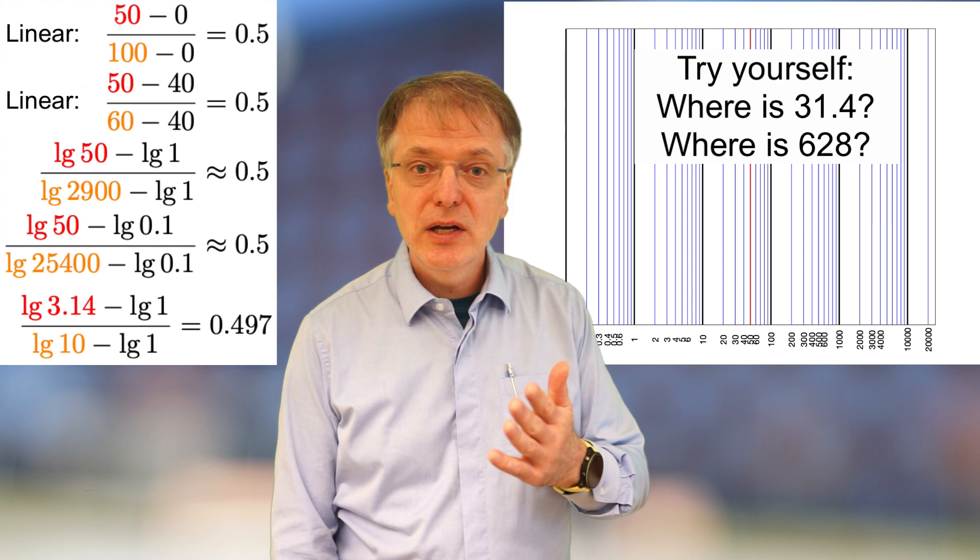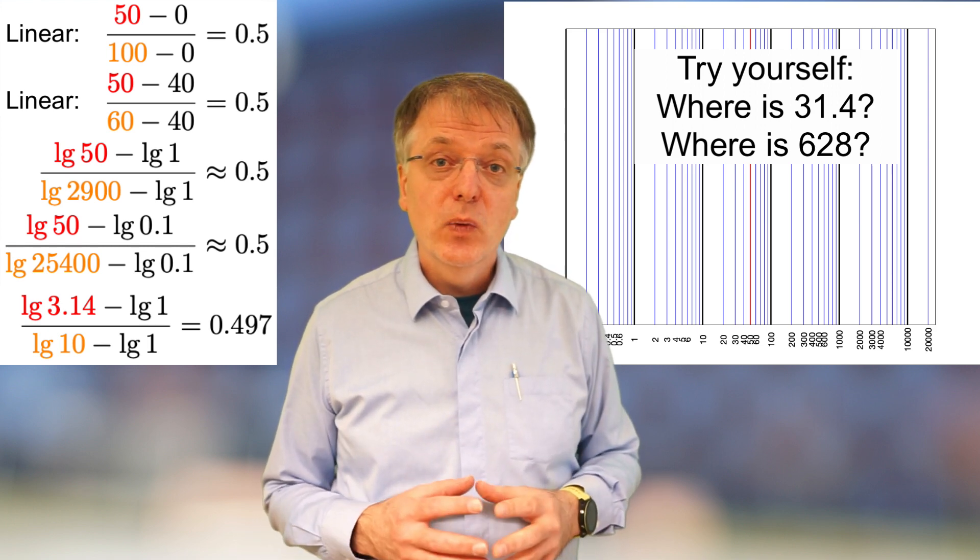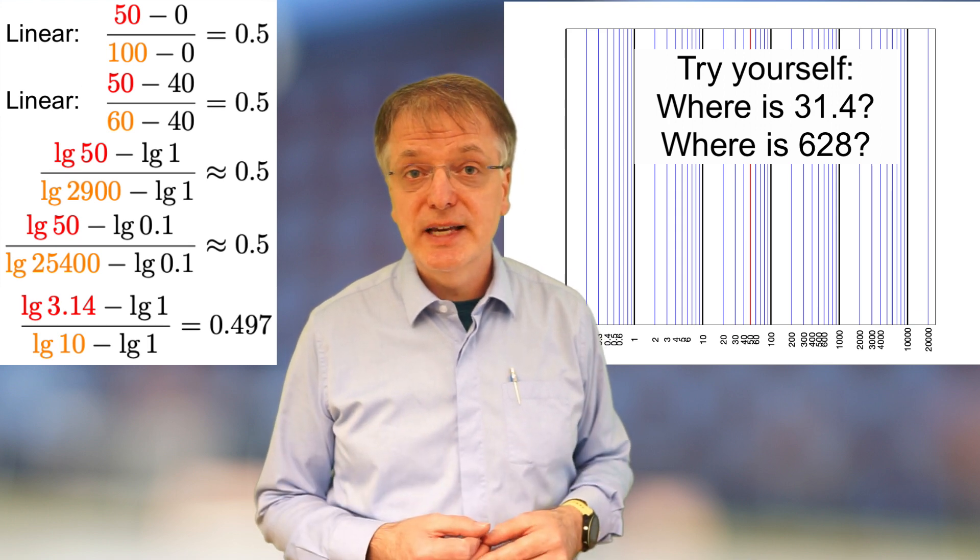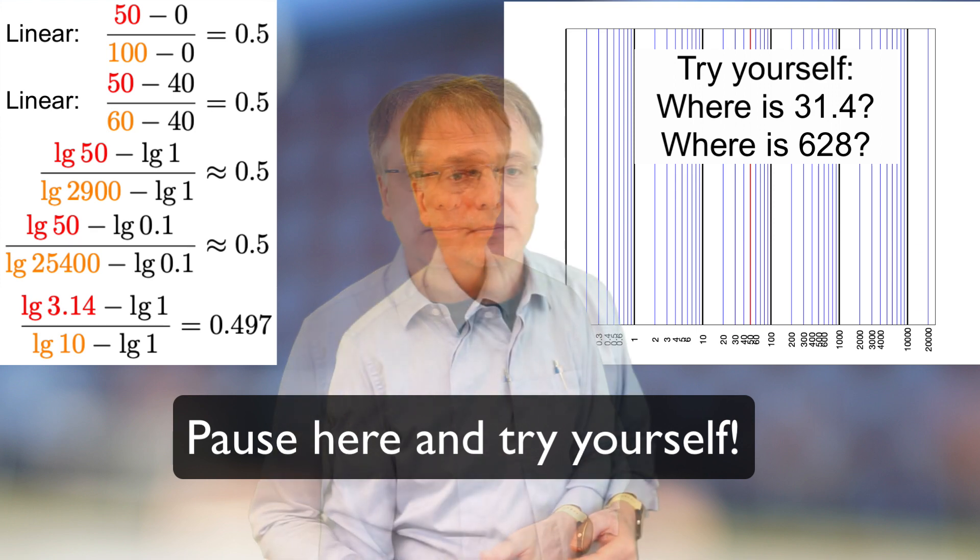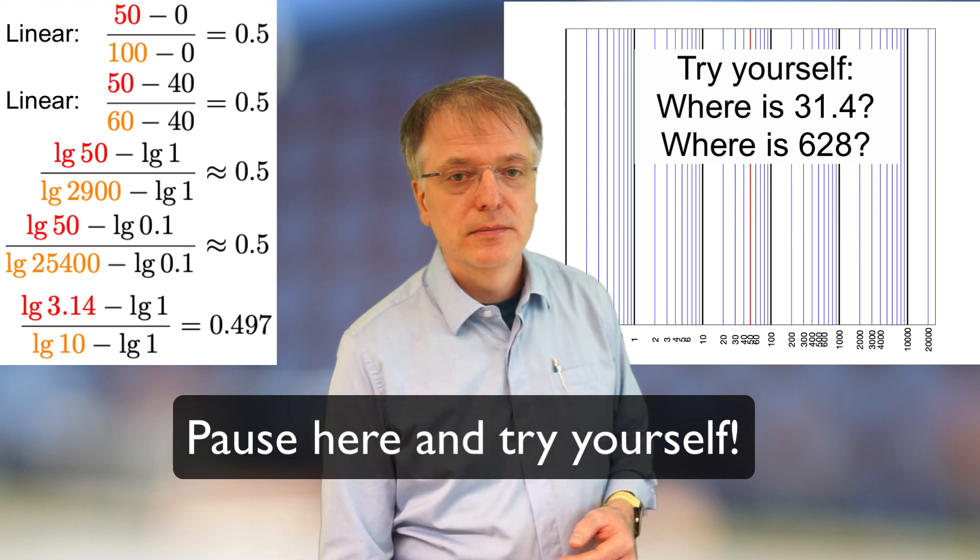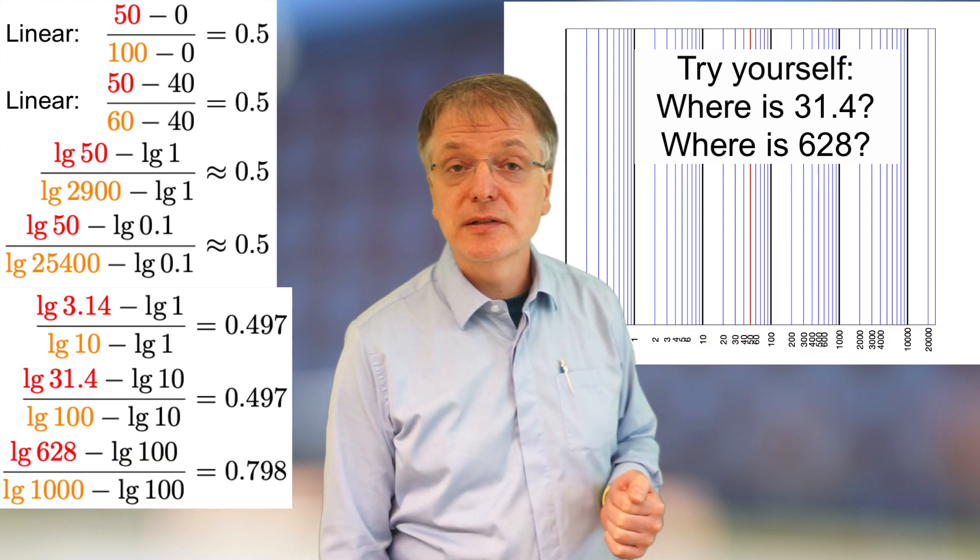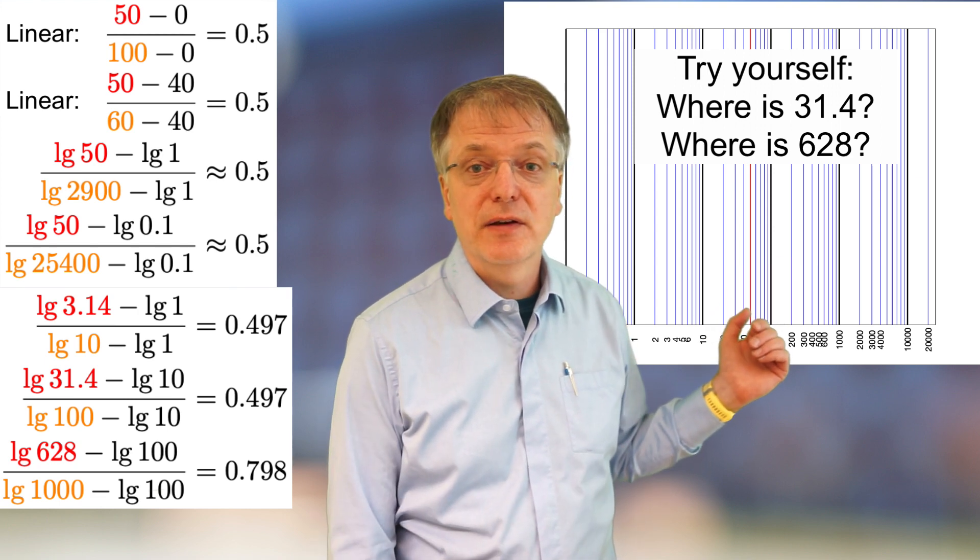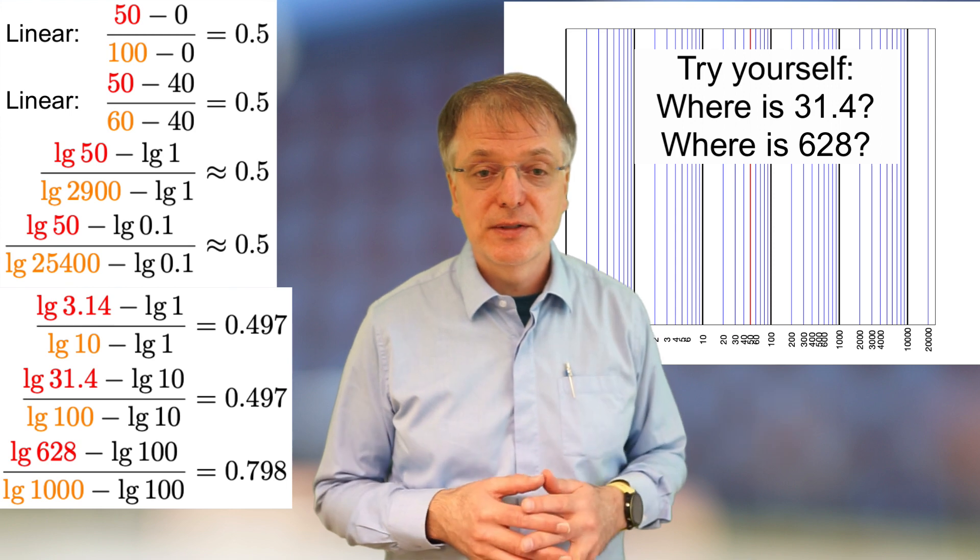Now try to do two examples yourself. Where is 31.4 and where is 628 in a logarithmic diagram. 31.4 is 49.7% of the distance from 10 to 100. And 628 is 79.8% of the distance from 100 to 1000.